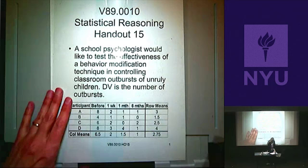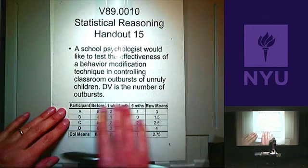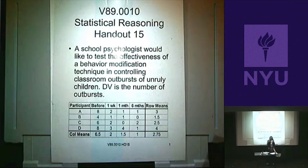One thing I want you to notice: if we pretend this is a two-way ANOVA, we have how many levels of this factor? And what about the kids, if we think of this as a factor? Also four, which would give us how many cells? 16, right?